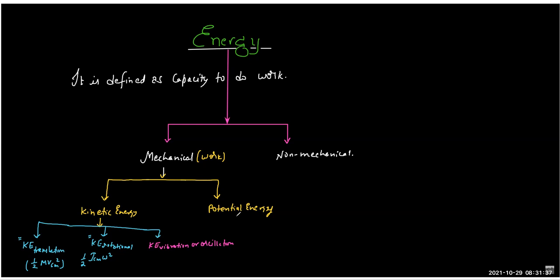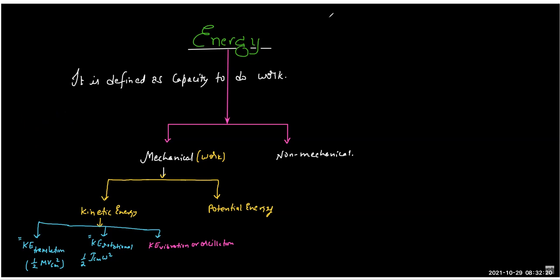A student asks about the rotational KE formula written as ½I_cm·ω² — where I_cm is called the moment of inertia. This will be covered in detail in the chapter on rotational dynamics, so there is no need to worry about it now. It is mentioned here just for completeness.